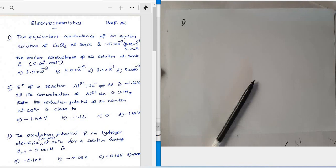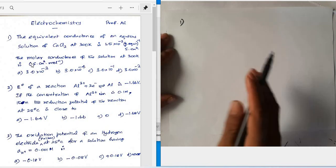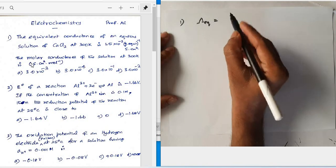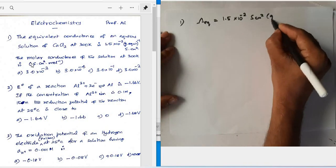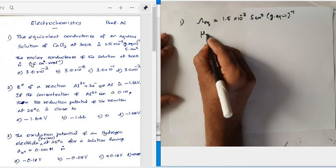Question number one: the equivalent conductance of an aqueous solution of calcium chloride at 300 Kelvin is 1.5 × 10⁻² gram equivalent⁻¹ Siemens centimeter squared. The molar conductance of the solution at 300 Kelvin is to be determined. We represent equivalent conductance with the symbol lambda equivalent.